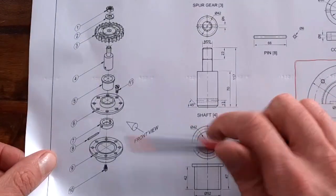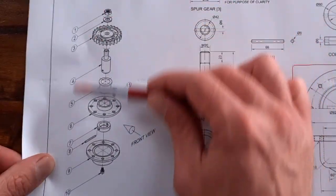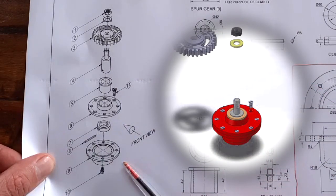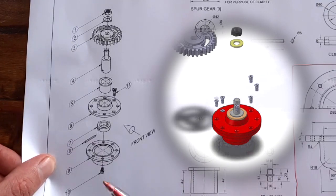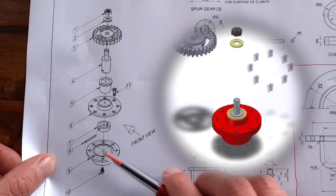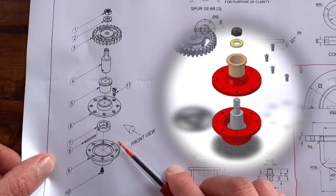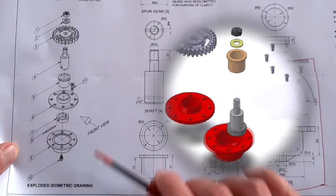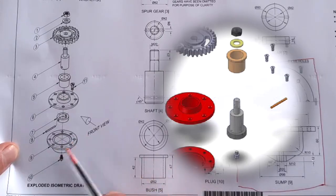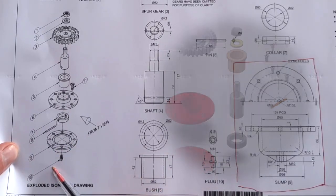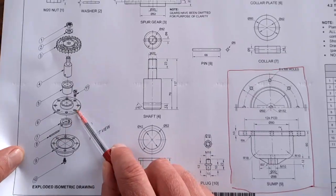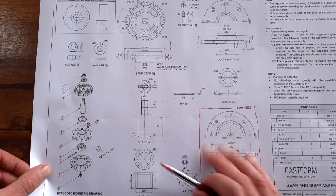They've given you an exploded isometric view of how it works, and I'm going to run a short video that shows you how this all fits together and the different components. Ideally, you would form this kind of picture in your mind, figuring out how all of this works together. This is a gear and sump assembly - right here at the bottom is the sump. We've got number 10 which is our plug, number 8 which is our pin, 7 our collar, 6 collar plate, etc. You're going to have to identify all of these.